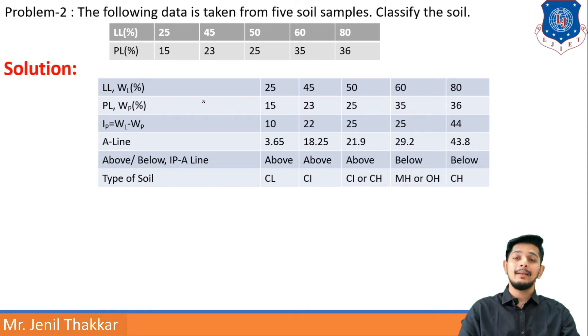Here LL and PL values are written according to problem. Then I have found out IP, that is plasticity index, WL minus WP. So the gap coming out as 10%, 22%, 25%, 25% again, and 44%. Now I want to find out A-line equation value.